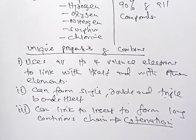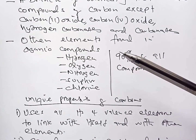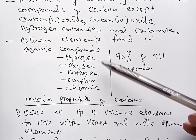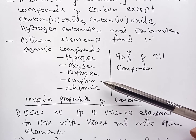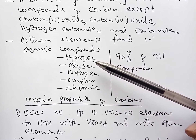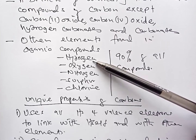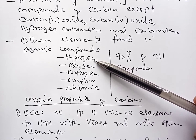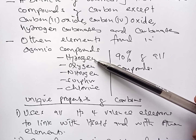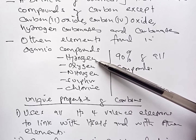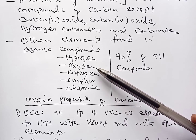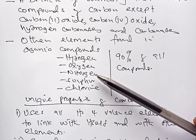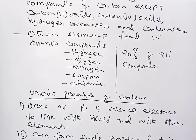The way our syllabus is arranged in 844 is that we have Organic One, which is studied at Form Three, and Organic Two, which is studied at Form Four. In Organic One, we study compounds of carbon that contain only hydrogen — commonly referred to as hydrocarbons. In Organic Two at Form Four, we look at compounds containing carbon and the other elements: oxygen, nitrogen, sulfur, and chlorine. Allow me now to introduce Organic Chemistry One.